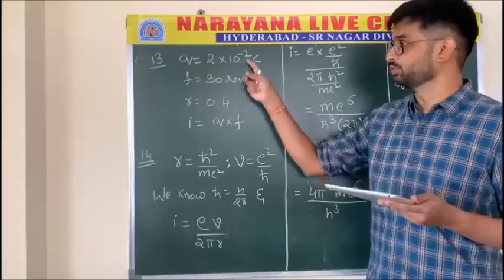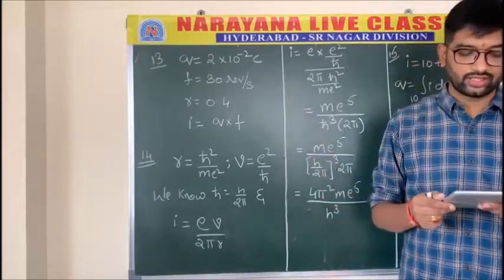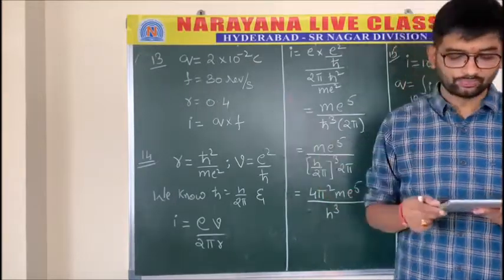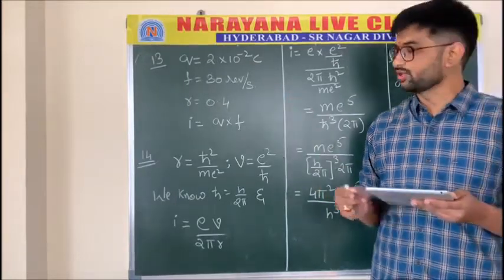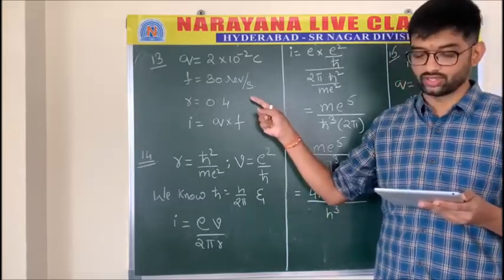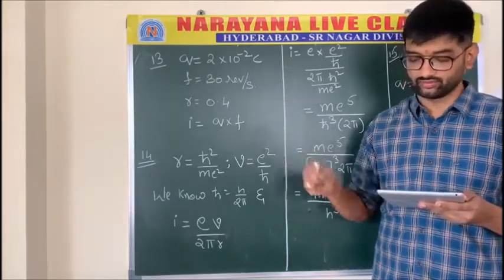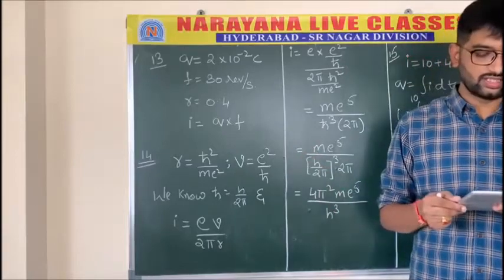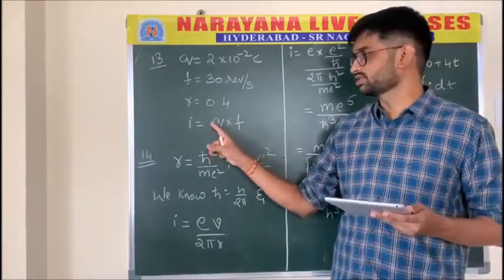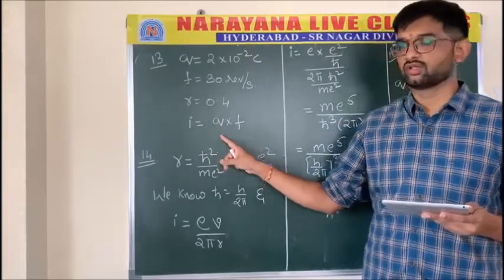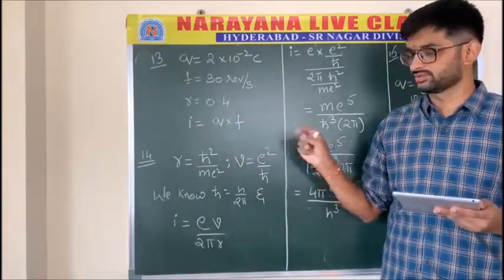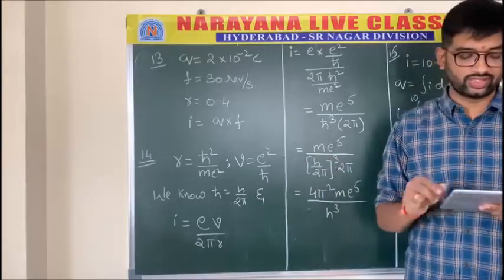Question number thirteen: a charge of 2×10⁻² coulombs moves at 30 revolutions per second in a circle of diameter 0.8 m (radius 0.4 m). Find the current linked with the circuit. Current = q×f = 2×10⁻² × 30, substituting gives the answer.